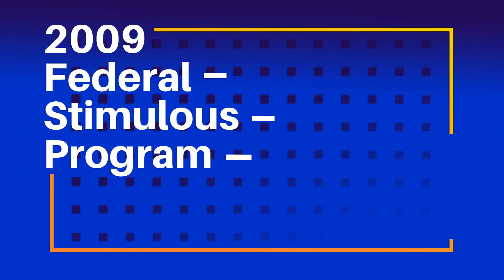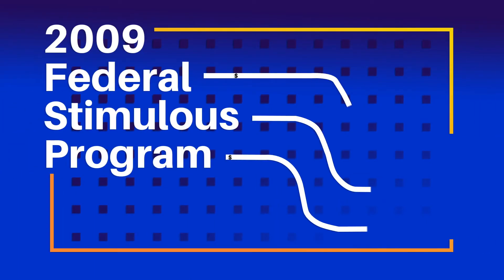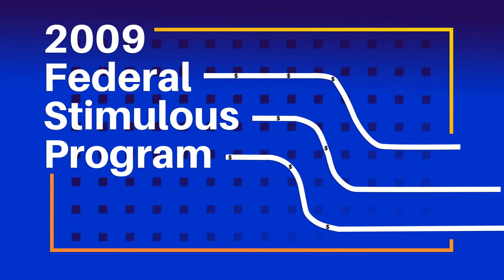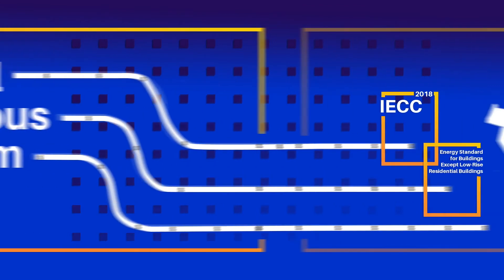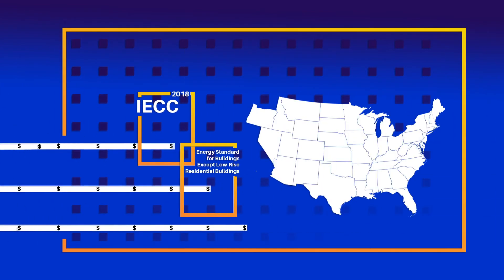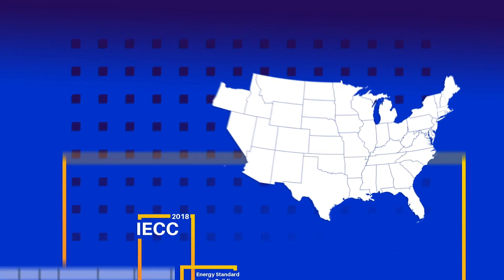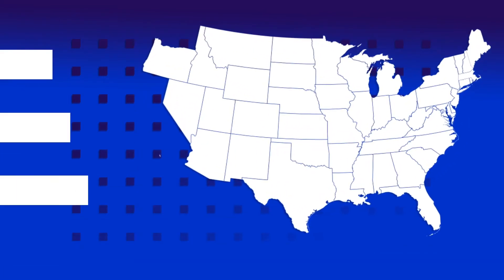One step towards standardizing energy codes nationwide occurred when the 2009 Federal Stimulus Program was made dependent on states adopting the 2009 IECC and ASHRAE 90.1 2007 edition. Almost all the states adopted those energy codes in order to qualify for federal funds.